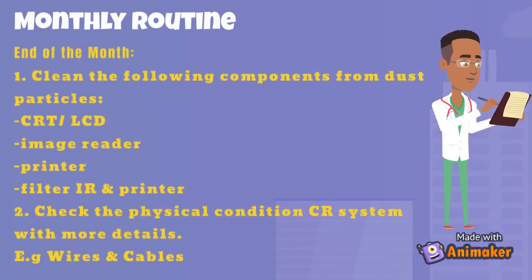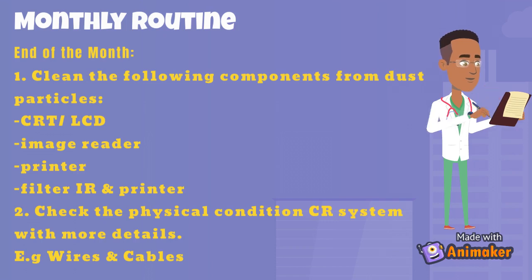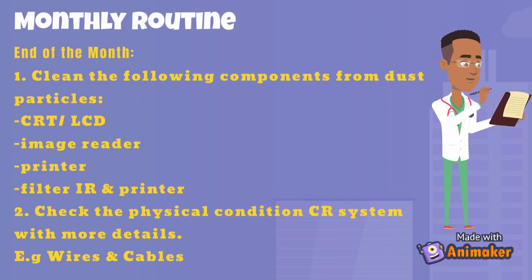Besides daily and weekly routines, the quality assurance for the CR reader can also be done through a monthly routine at the end of the month. This includes cleaning the CRT or LCD from dust particles, cleaning the image reader and printer from dust and debris, clearing the filter of the image reader and printer from dust, and checking the physical condition of the CR system in more detail.